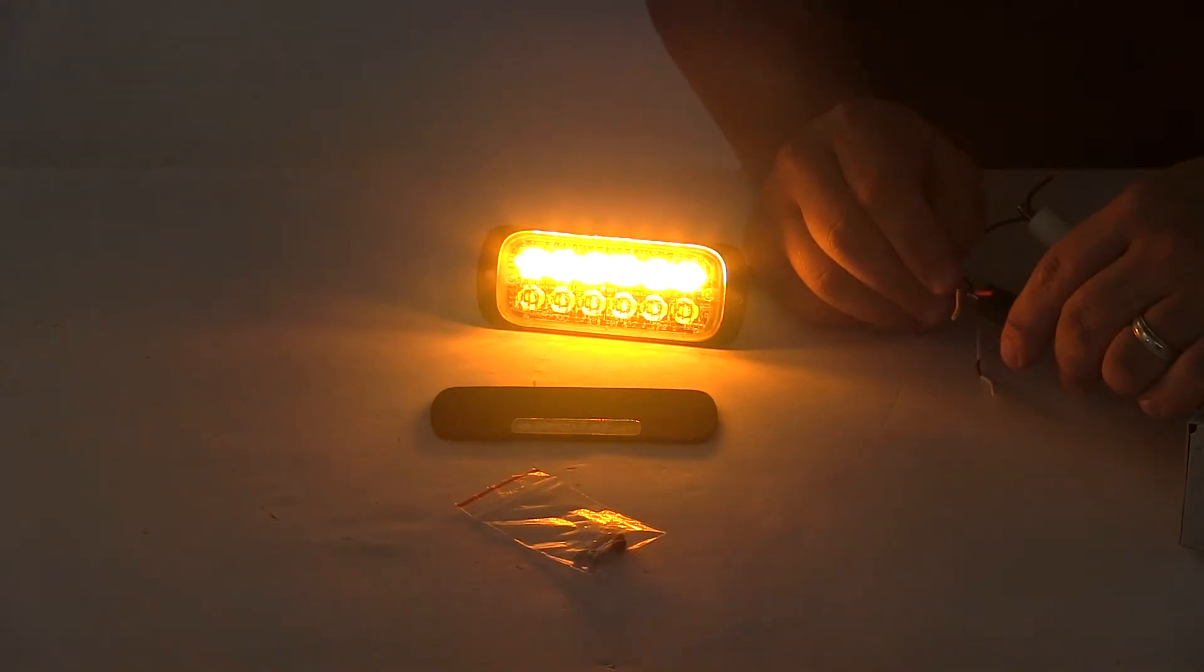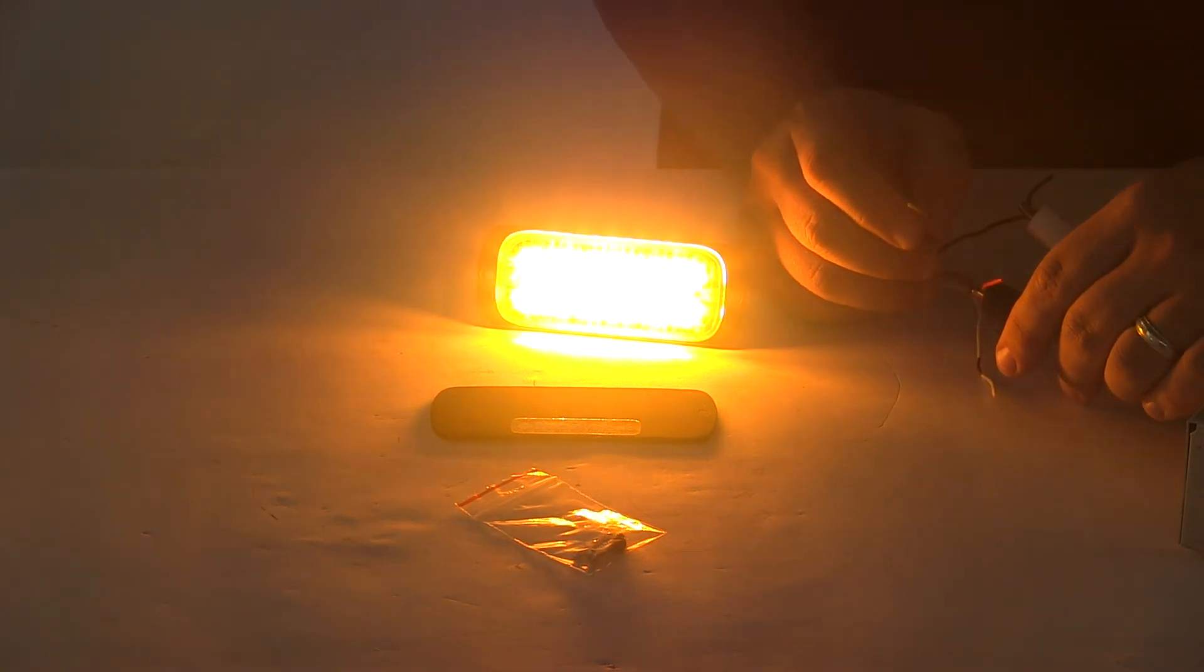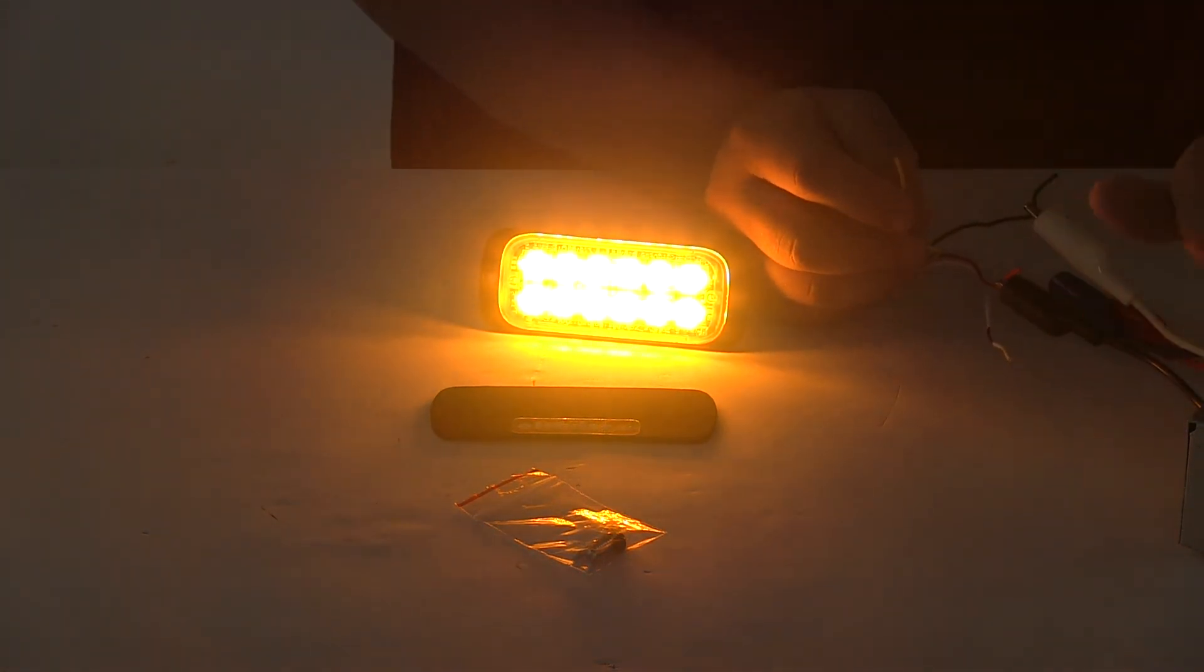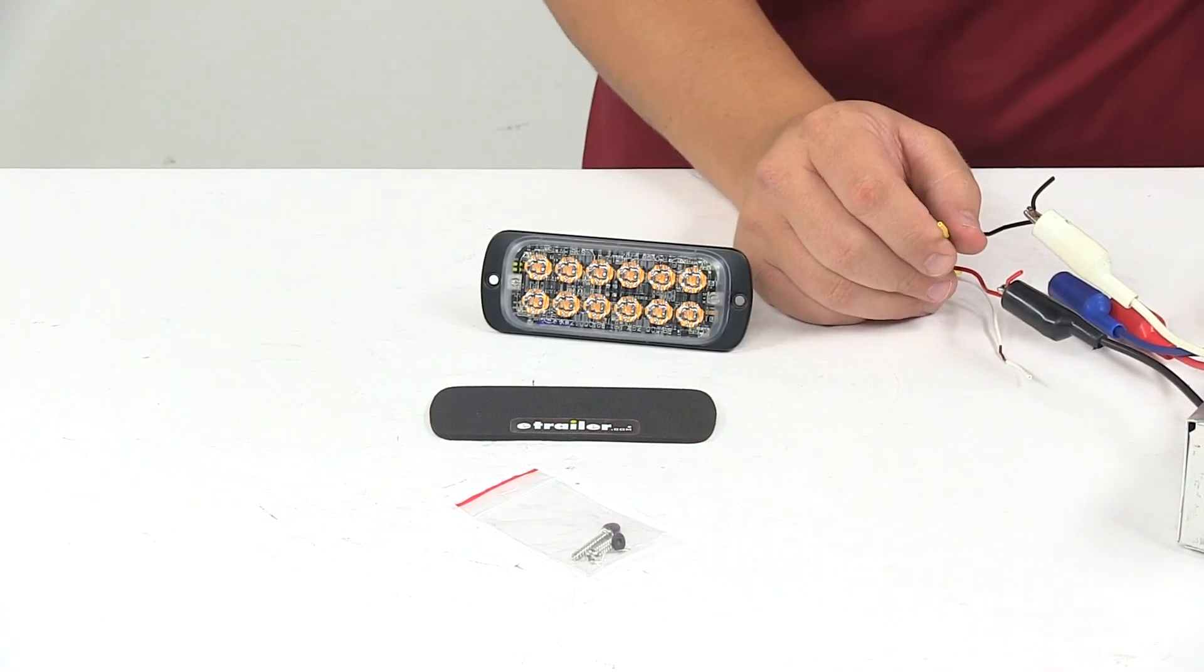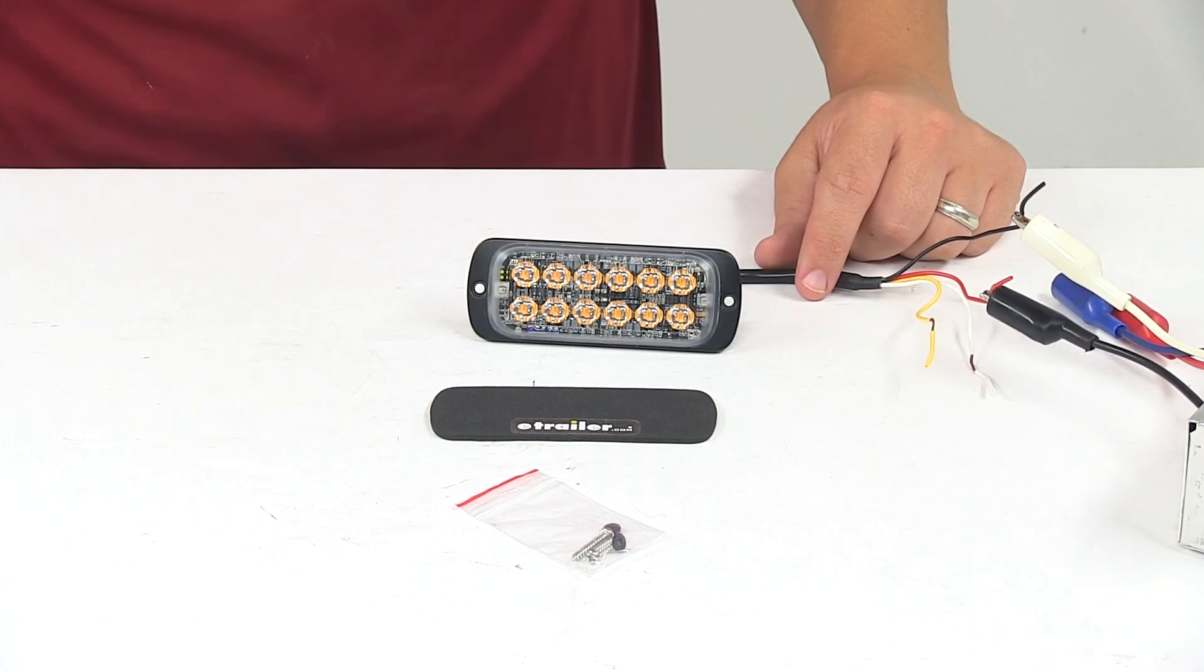And it has a chart in the install instructions that shows the name of each individual flash pattern. That's going to do it for today's look at the Byers Products 12 LED Thin Mount Strobe Light.